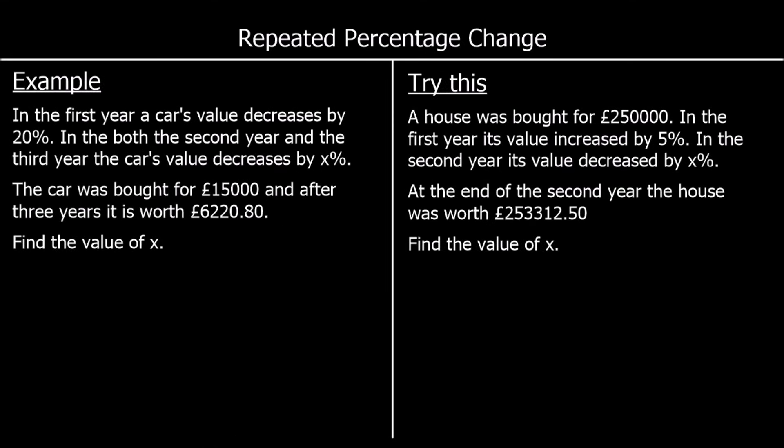One more example. In the first year, a car's value decreases by 20%. In both the second year and the third year, the car's value decreases by X%. The car was bought for £15,000. After three years it's worth £6,220.80. Find the value of X. So we had an original value of £15,000. In the first year it decreased by 20%, so the multiplier to decrease by 20% is 0.8.